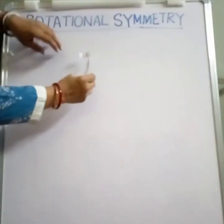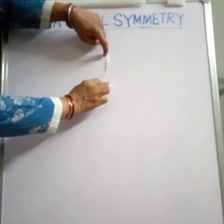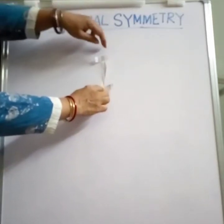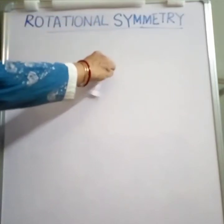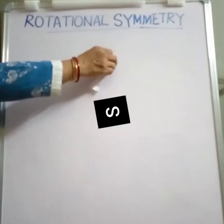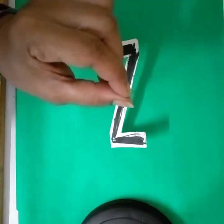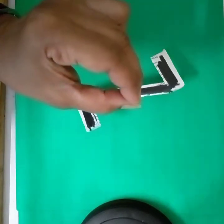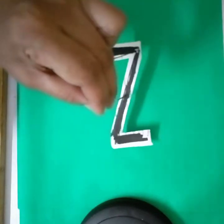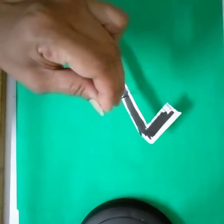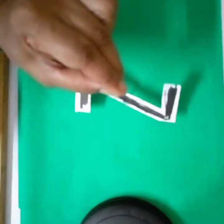Now, this is Z and we are trying to rotate it. After half a rotation it has come back to its original position. Z if rotated will look alike in two positions — this is the original position of Z, and after completing half a round, Z is looking the same again.